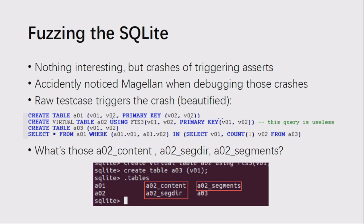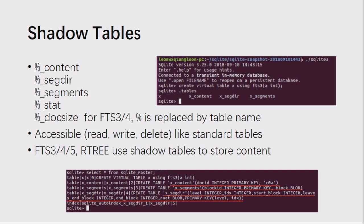I was surprised to find that the .tables command showed six tables. The question was: what do those content, segdir, and segments stand for? The SQLite manual shows these are called shadow tables. The five types of shadow tables — content, segdir, segments — are for FTS3 or FTS4, while stat and docsize are FTS4 only. However, because those tables are treated like standard tables, you can create corresponding stat and docsize tables even when operating on an FTS3 table.